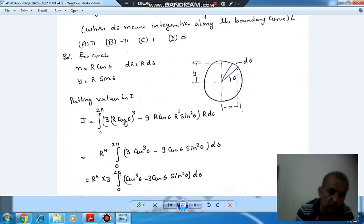So 3r cos³θ minus 9r cos θ · r sin θ · r dθ. We can take r⁴ as common, which will be 0 to 2π. So it will be 3 cos³θ minus 9 cos θ sin²θ dθ.